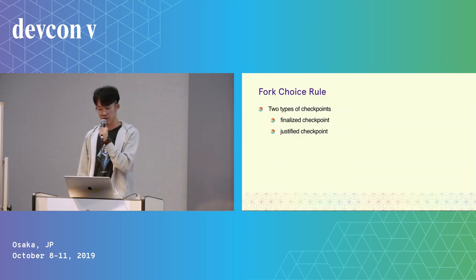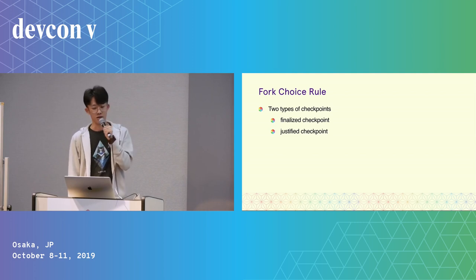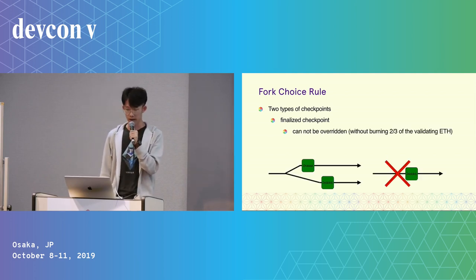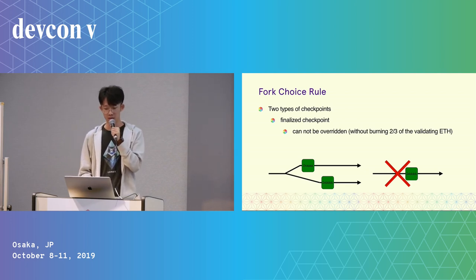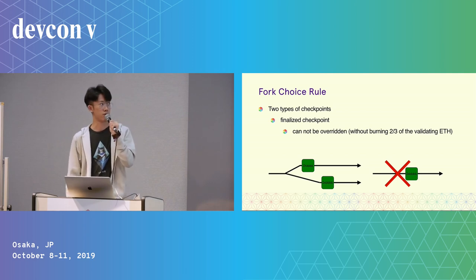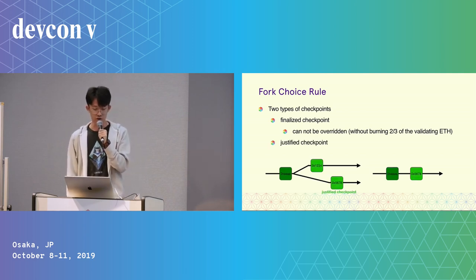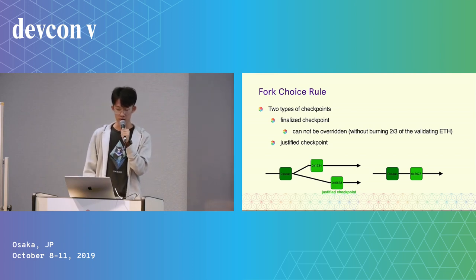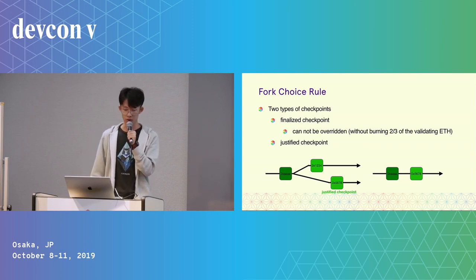Before I get to the fork-choice rule, there are two types of checkpoints. The first one is the finalized checkpoint. The second one is the justified checkpoint. We do not override the finalized checkpoint unless there's an attack — but in that case, we can know for sure that at least one third of the validators will be slashed. For the justified checkpoint, it can be overwritten, and we will switch to the more recent justified checkpoint.